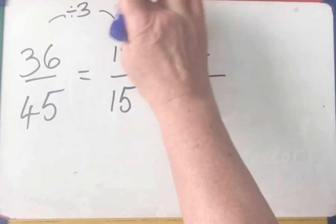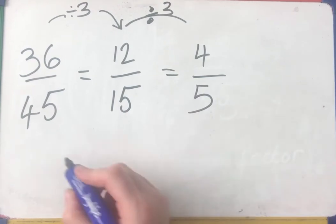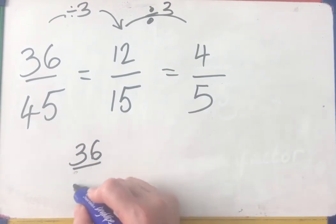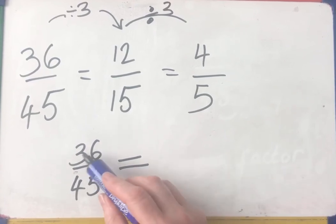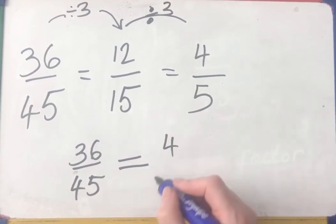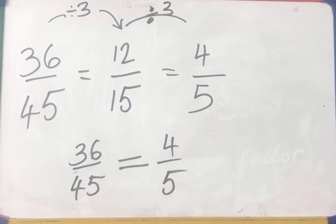Again, a bit of a mess there. I could have done, if I was really good at my times tables, I could have just gone straight for dividing by 9 and said that 36 divided by 9 is 4, 45 divided by 9 is 5. So that's how you find an equivalent fraction.